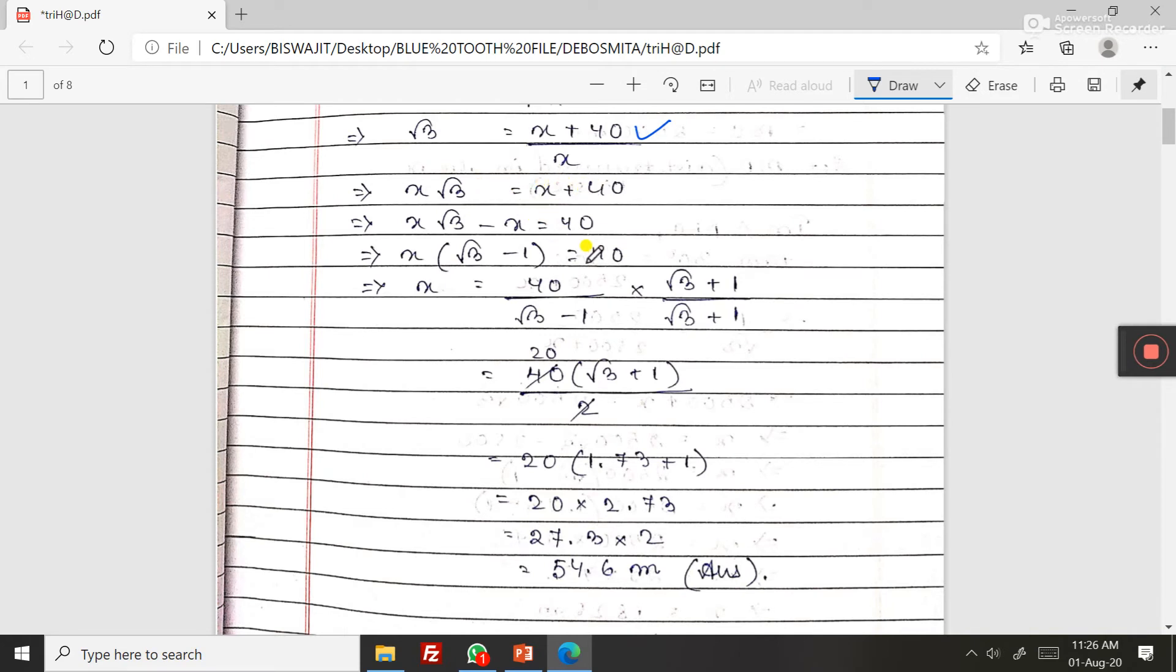Now if you make it root 3 then root 3 plus 1 by root 3 plus 1, you have to multiply, you must have to give bracket here. Then denominator a squared minus b squared, that is root 3 squared minus 1 squared, that is 3 minus 1, that is 2.